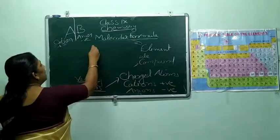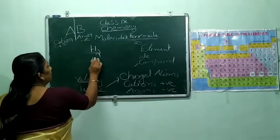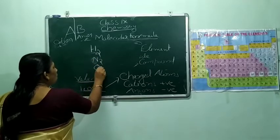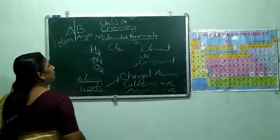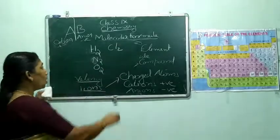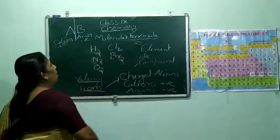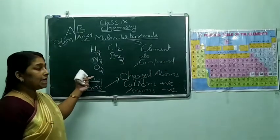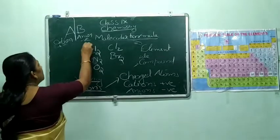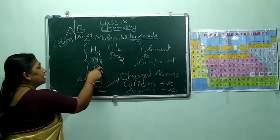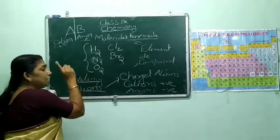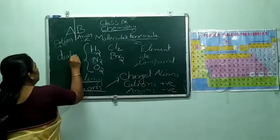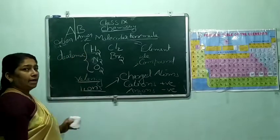Hydrogen, nitrogen, oxygen, chlorine, bromine — all these nonmetal elements exist as diatomic. Why diatomic? Because two atoms combine together to give one molecule, so in a molecule two atoms are there — it is called diatomic.